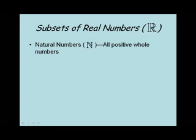The natural numbers, represented by this funny looking N, is the set of all positive whole numbers. When I say whole numbers, I mean numbers that written as a decimal would be something like 3.00 with as many zeros as you wanted to write.